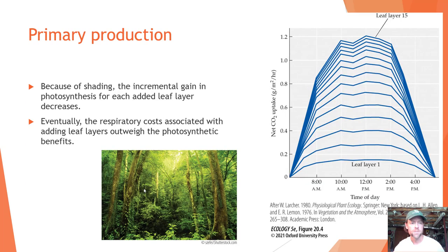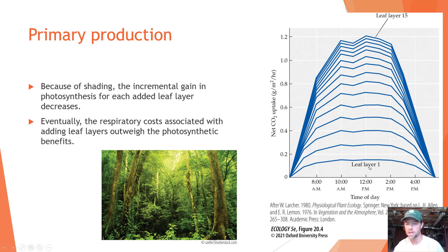Because of shading, the incremental gain in photosynthesis from each added leaf layer decreases, and eventually the respiratory costs of adding more leaf layers outweigh the photosynthetic benefits. You can see the net carbon dioxide uptake across different leaf layers from the uppermost to the lowest, and there's a decrease in net primary productivity uptake. Also interesting is that it changes through the time of day — there's a peak, then a dip around noon likely due to the sun's angle, and then it increases again as the day progresses.